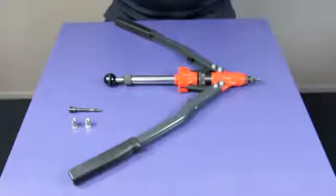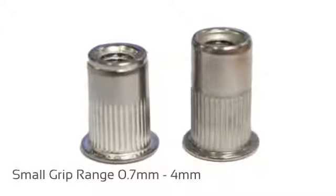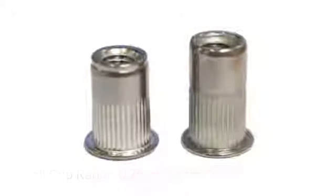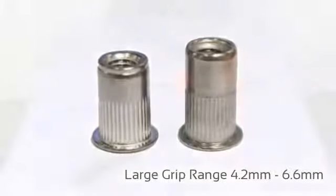Before you start, make sure the nut rivet you selected suits the material you were using. There are two basic types of nut rivets: one for grip ranges of 0.7 to 4 mil and one for 4.2 to 6.6 millimetres.